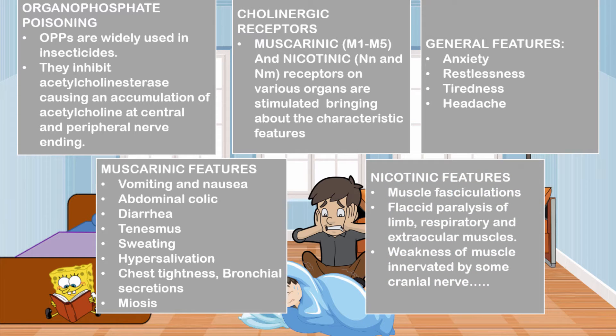Nicotinic features include muscle fasciculations, and there may be flaccid paralysis of the limb muscles, the respiratory muscles, and even the extraocular muscles. You may also get weakness of the muscles innervated by some of the cranial nerves.